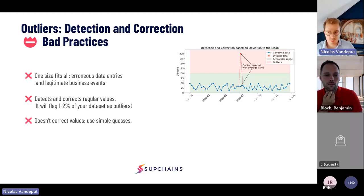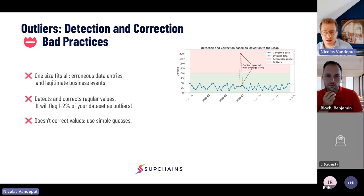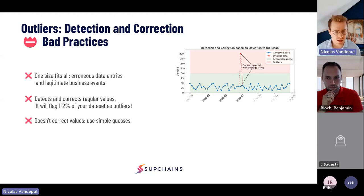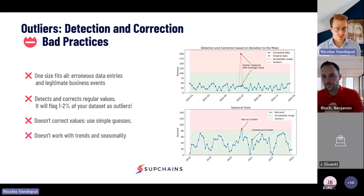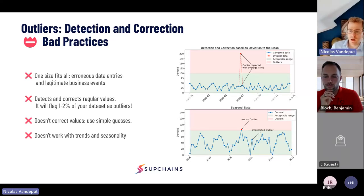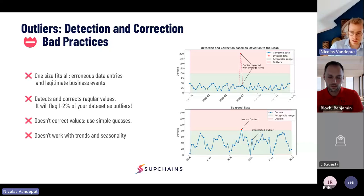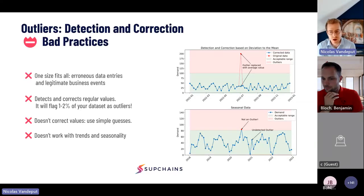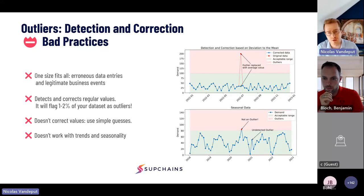Additionally, once we flag an outlier, replacing it with the average demand is really just a simple guess — not smart. Worst of all, this technique fails completely when you have a trend or seasonality. With seasonal data, high-season points get flagged as outliers even though they're perfectly normal. And a real outlier close to the average won't be detected. So this deviation from the mean — which 46% of you are using — is really not a best practice.